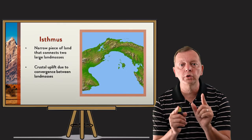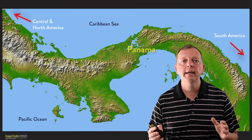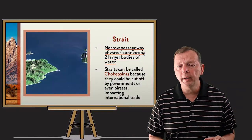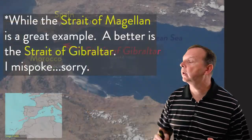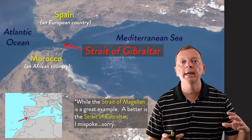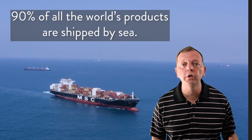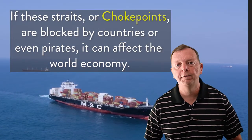Then there are isthmuses and straits, which are essentially mirror images of each other. An isthmus is a narrow stretch of land that connects two larger bodies of land — Panama is a perfect example, connecting Central and South America while separating the Caribbean Sea from the Pacific Ocean. The isthmus's mirror image is the strait, which is a narrow stretch of water that connects two larger bodies of water. The Strait of Magellan is a great example — at its narrowest of just eight miles across, it connects the Atlantic Ocean to the Pacific Ocean. Because 90% of all the world's goods are moved by ships, these straits can be choke points if countries or even pirates interfere with international trade.